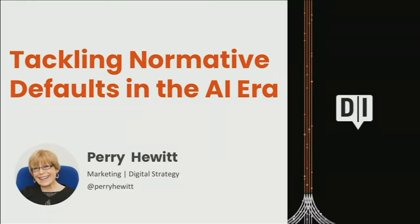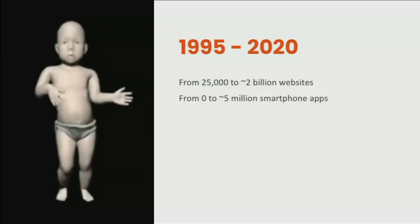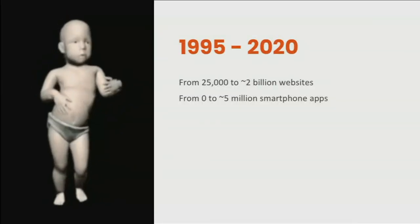Today we're going to look at the known issue of normative defaults in interface design. We're going to consider the lessons we learned during this era — where normative defaults are and are not applicable to the AI era — run through a couple of examples, and then some ideas for mitigation.